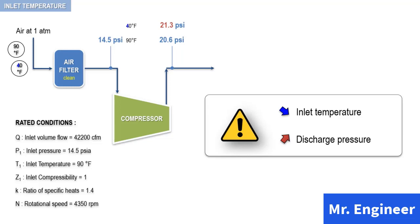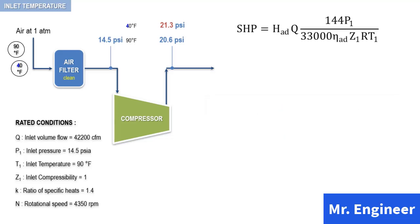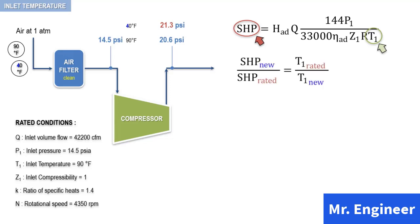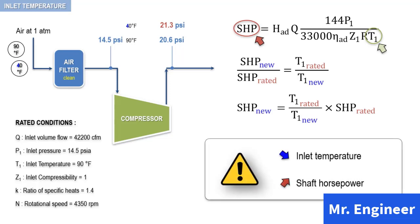As you can see, reducing the inlet temperature will increase the discharge pressure. Let's now examine the effect of the reduction in inlet temperature on shaft horsepower. Referring back to the shaft horsepower equation, without taking into account the mechanical losses, we find that shaft horsepower is inversely proportional to inlet temperature. So we can derive the following useful relationship: a decrease in the inlet temperature will result in an increase in the shaft horsepower.